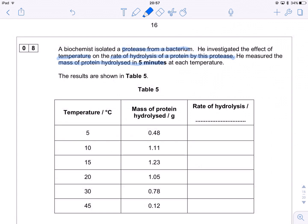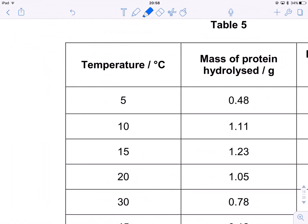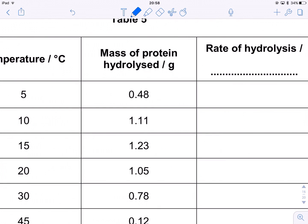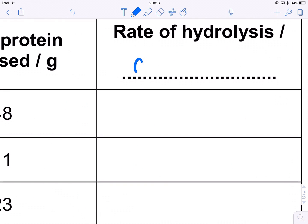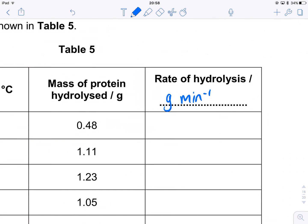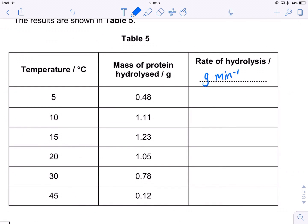So he's measured how much protein was hydrolyzed. This is in a 5 minute period. We're going to make it into more of a standard rate here. So we're going to measure it in grams per minute. So grams per minute to minus 1. And all we've got to do is literally divide these numbers by 5. Nice and straightforward. So let's smash through those nice and quickly.